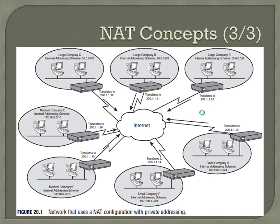Here's a quick overview: large companies A, B, and C have different public addresses like 200.1.1.12, but they're all using the same 10.0.0.0 range internally. Since they're being translated, the public internet only sees them as the 200.1.1.12 address with different port numbers, so there's no overlap. Same thing for medium businesses — two companies both using the 172.16.0.0 range with no overlap because they're being translated. For smaller businesses, 192.168.0.0/24.